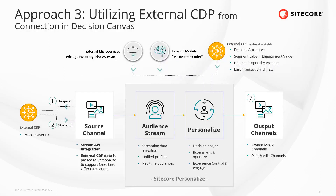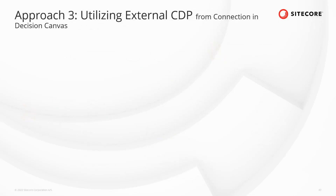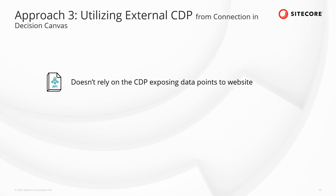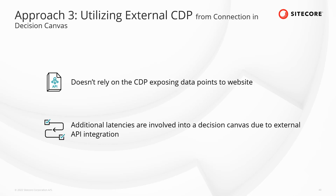In Approach 3, the integration can be done as the external CDP or customer store exposes their master ID to the website data layer. Identity can be sent to Sitecore Audience Stream using the identity event or the personalization request. The external CDP exposes customer attributes via APIs. A once-off connection to the API is configured within Personalize and made available for selection in the decision canvas. When a personalization request is made, additional data such as persona, segment labels, or other customer attributes are pulled from the CDP APIs and leveraged within the canvas to help determine the next best action. Although a more complex integration, it does not rely on the CDP exposing lots of data points to the website data layer — only the ID. Additional latencies are involved in the decision canvas due to the external API integration, though this may not have any material impact on overall performance, especially for triggered pushes to downstream channels.